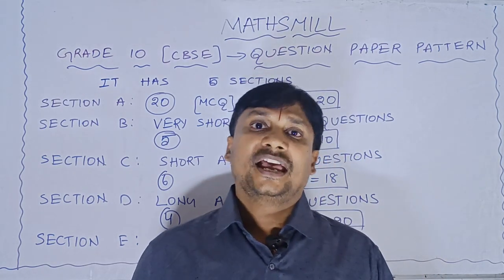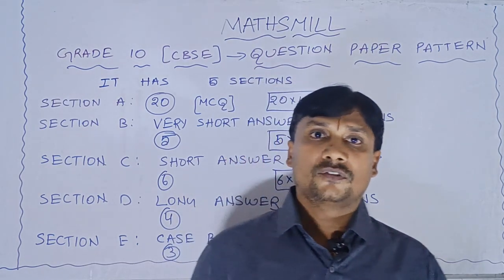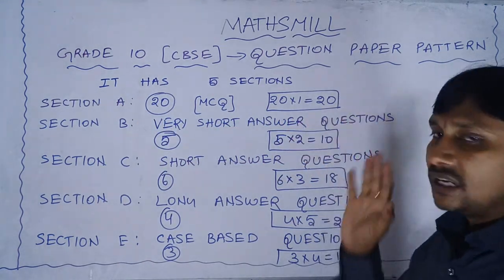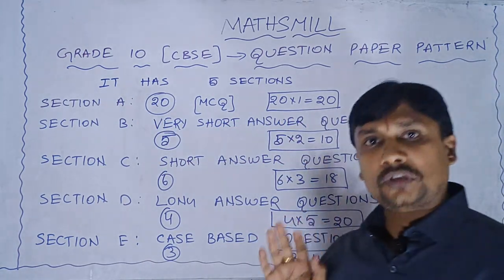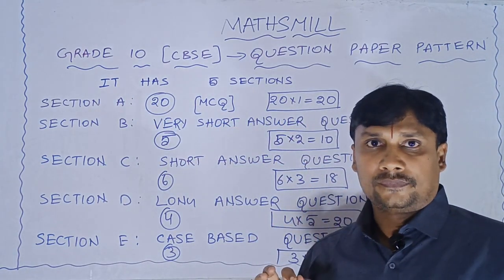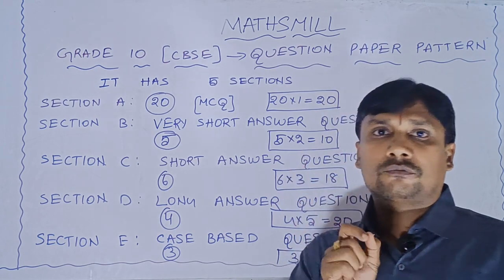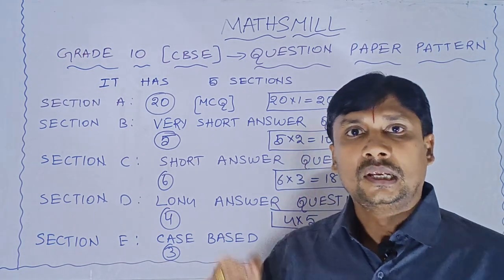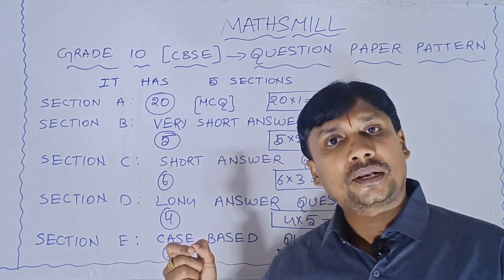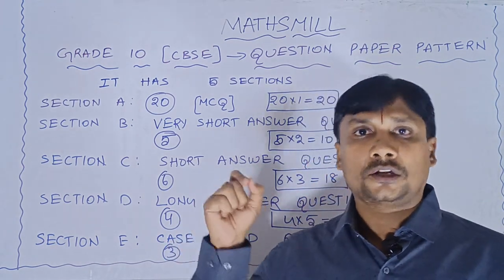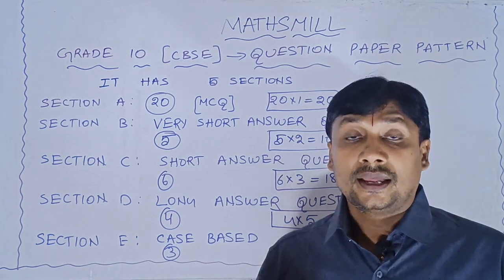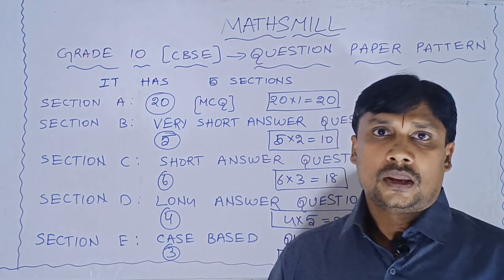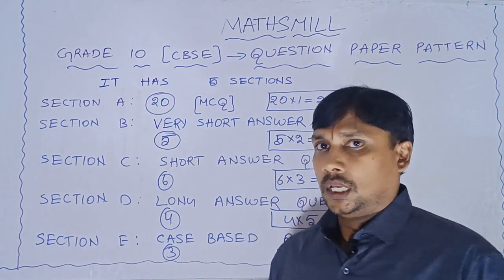In Section A, there are 20 MCQs. Everyone should remember that question numbers 19 and 20 are assertion-reason type questions.